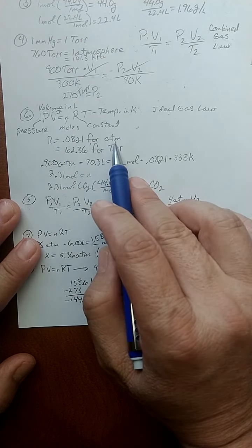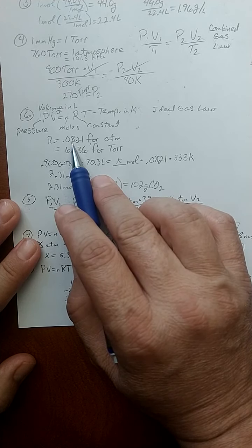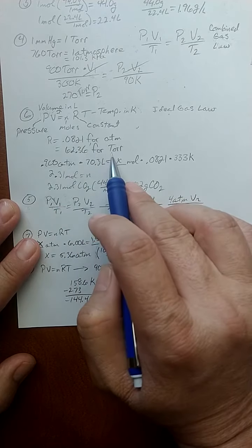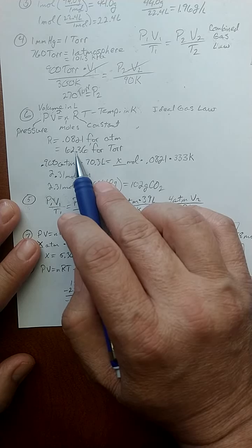And if you're going to use atmospheres, the constant value for R is 0.0821. If you're going to use torr, the constant value is 62.36. This isn't stuff we memorize. It's always available.